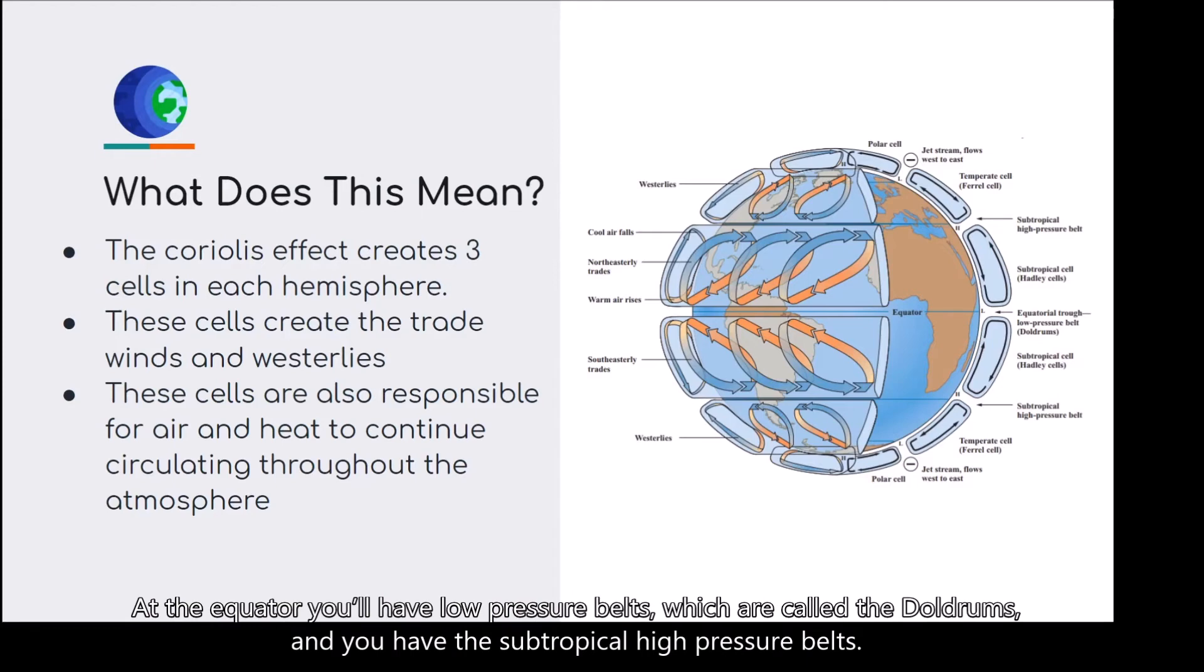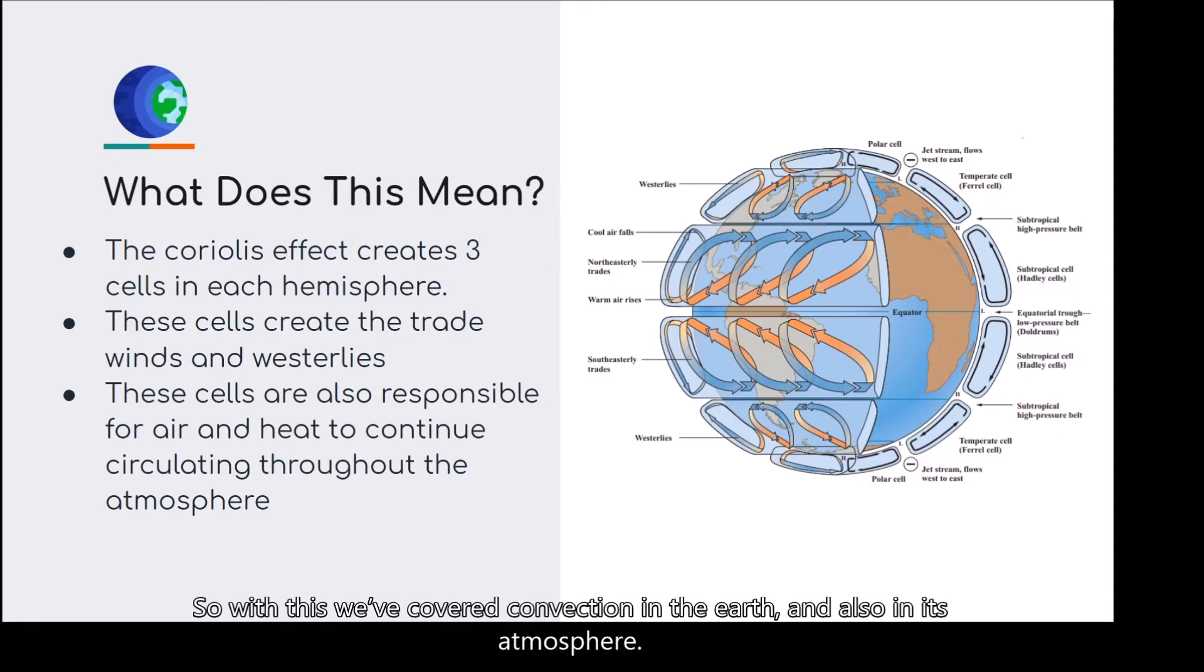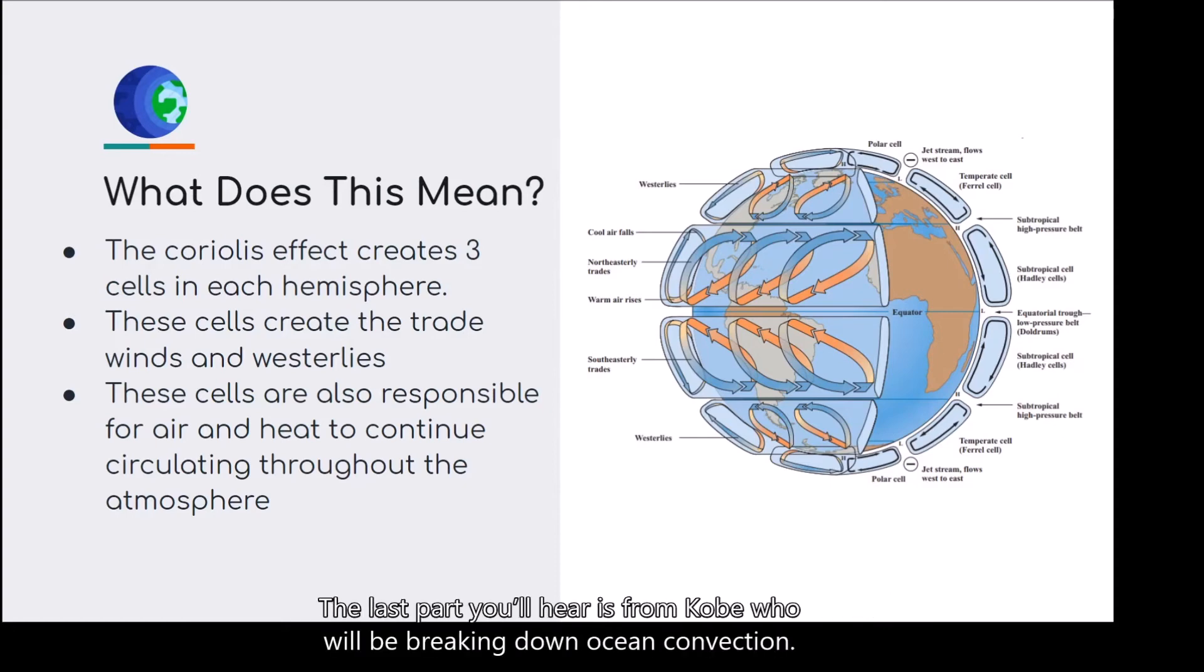At the equator, you're going to have low-pressure belts, which are called the doldrums, and you have the subtropical high-pressure belts. So with this, we've covered convection in the Earth and also in its atmosphere. The last part you'll hear is from Kobe, who will be breaking down ocean convection.